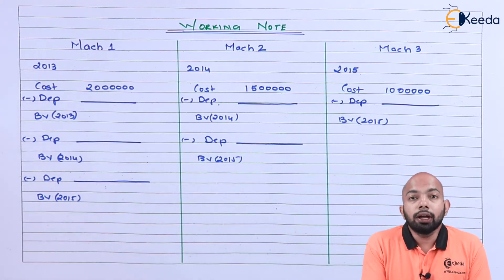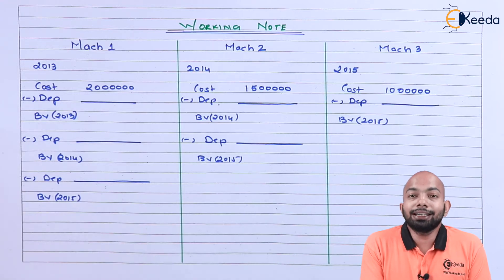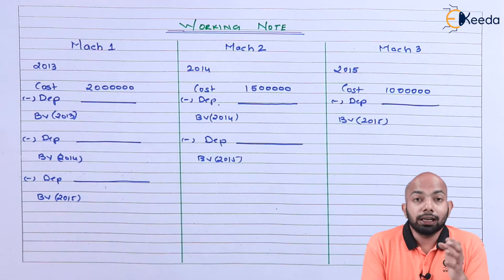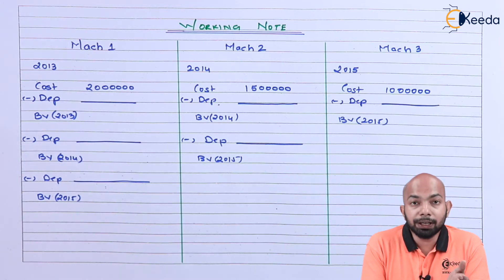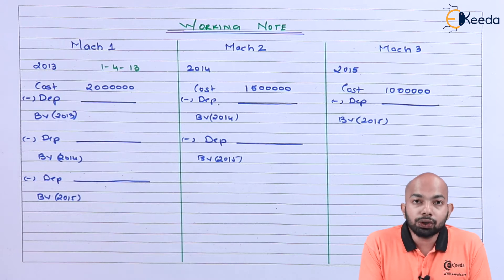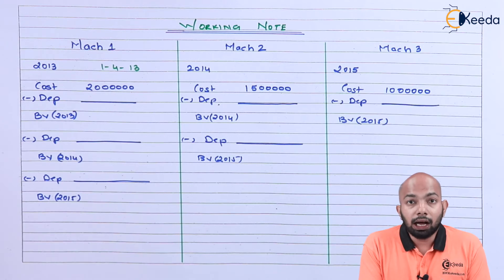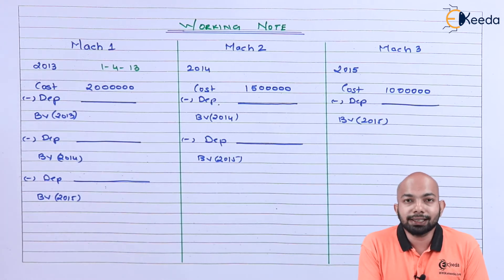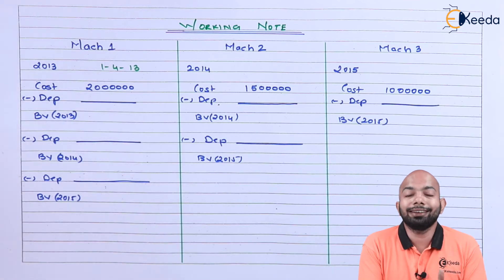The cost of Machine 1 was 20 lakh rupees. The tenure is very important — it was purchased on 1st April 2013, so depreciation is calculated on the basis of that tenure. For the year 2013, the depreciation will be 20 lakh multiplied by 10%, multiplied by 8 divided by 12. The reason is depreciation is calculated only for 8 months from April until December. In the next year, it will be used for 12 months, considering no sale transaction has been done for that machine.